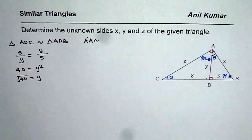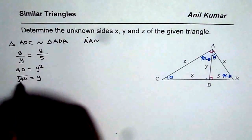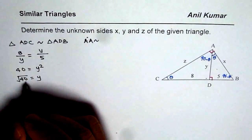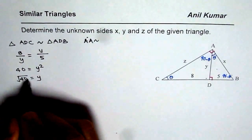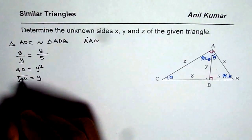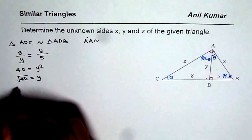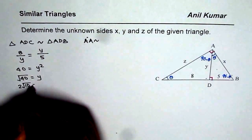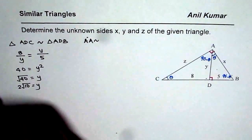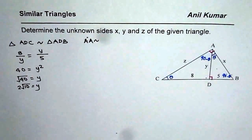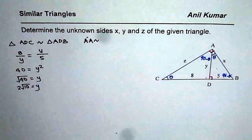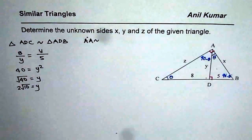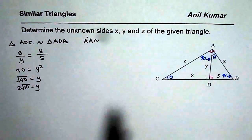So Y is the square root of 40, which we can write as square root of 4 times 10, which is 2 square root of 10. So we got the value of Y using these two triangles. I think you have understood the concept.